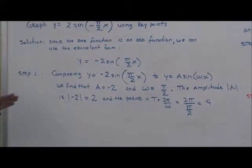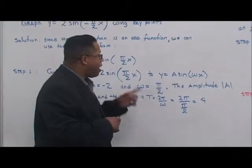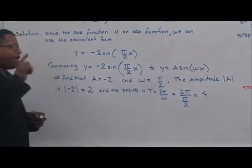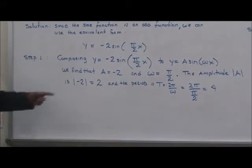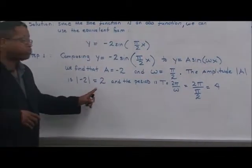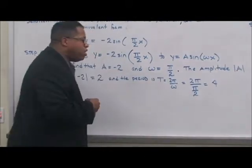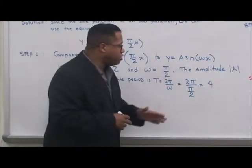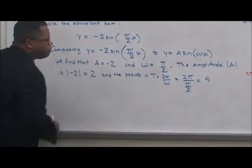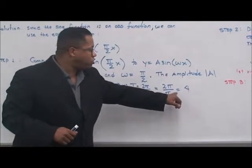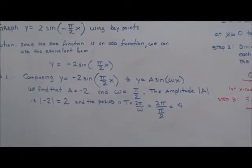We find that a equals negative 2 and omega equals pi over 2. The amplitude is the absolute value of a, which is the absolute value of negative 2, equal to 2. The period is t equals 2 pi divided by omega. So 2 pi divided by pi over 2 gives a period of 4.